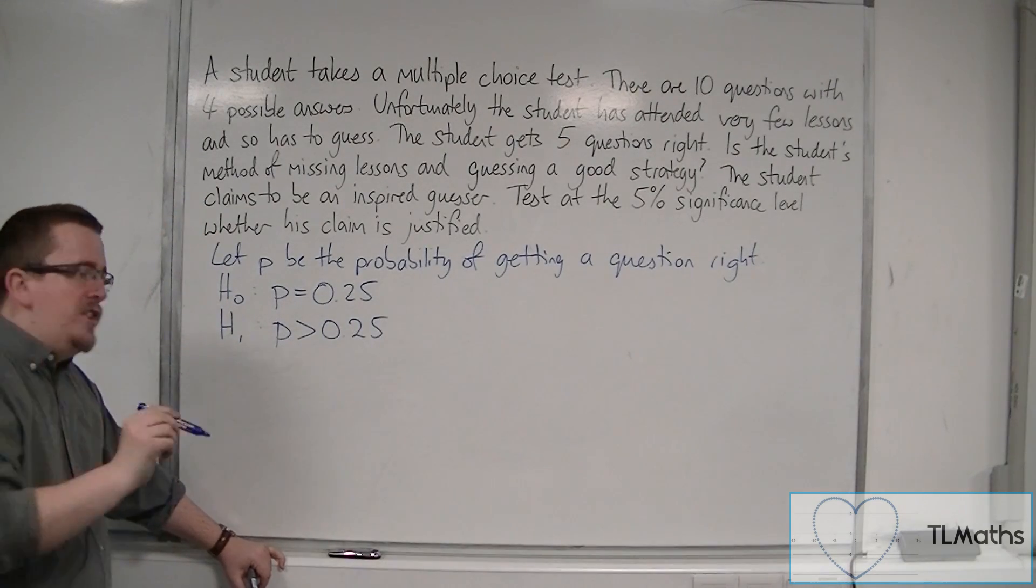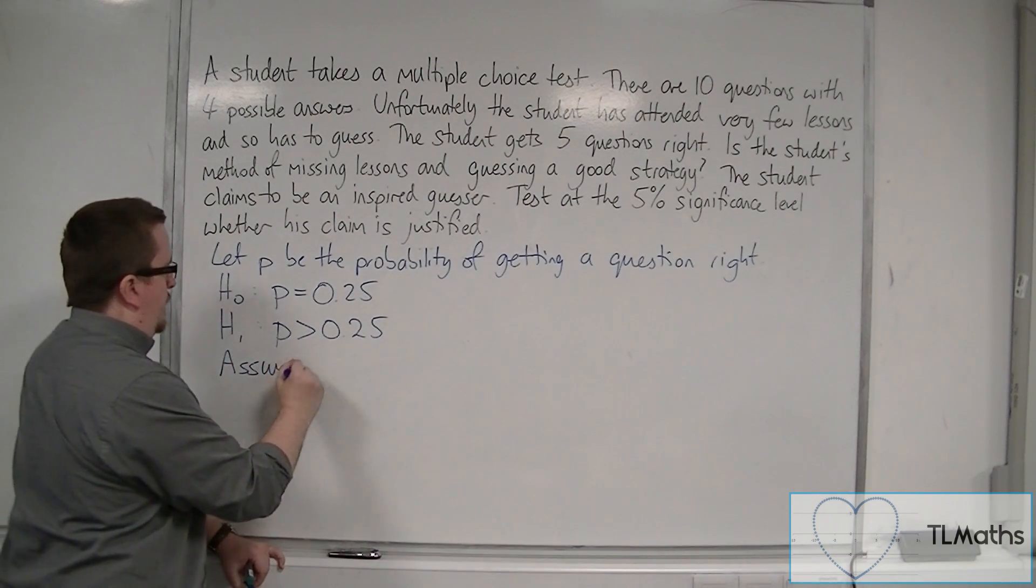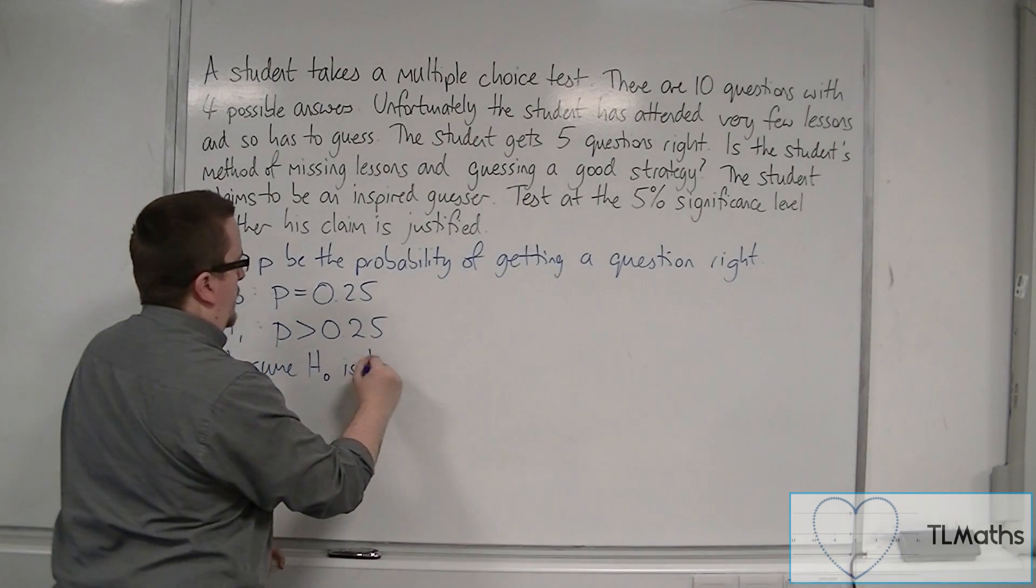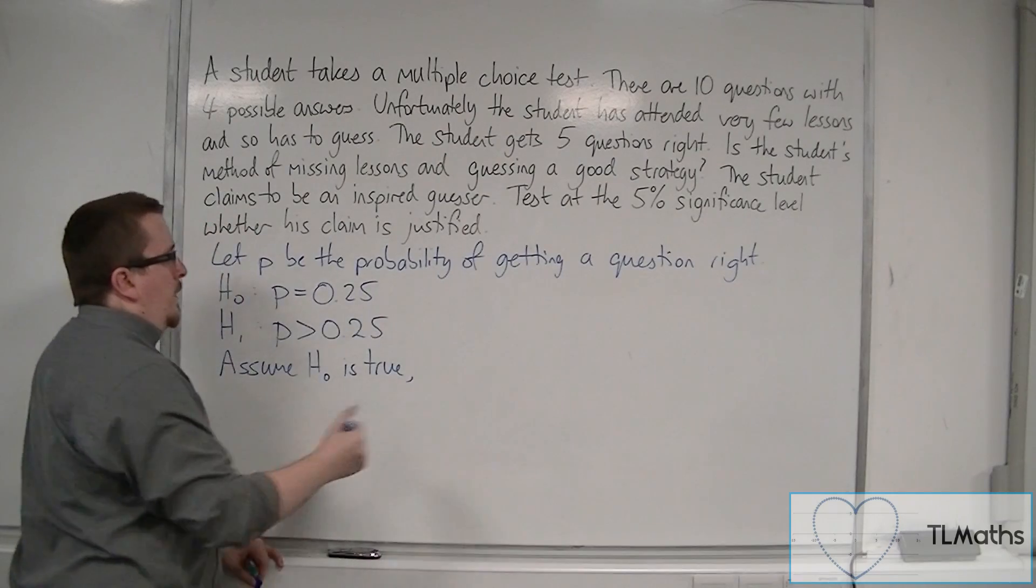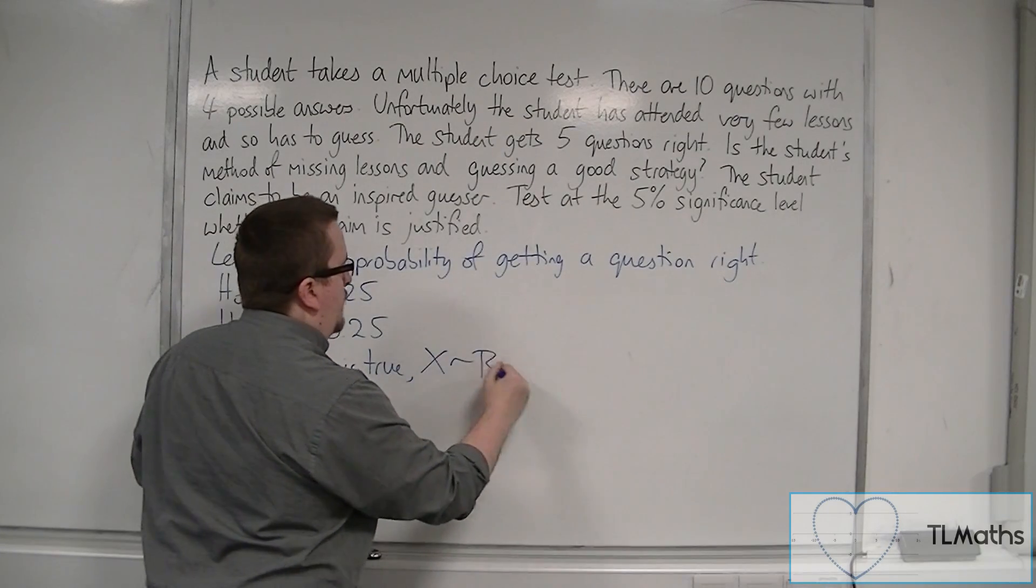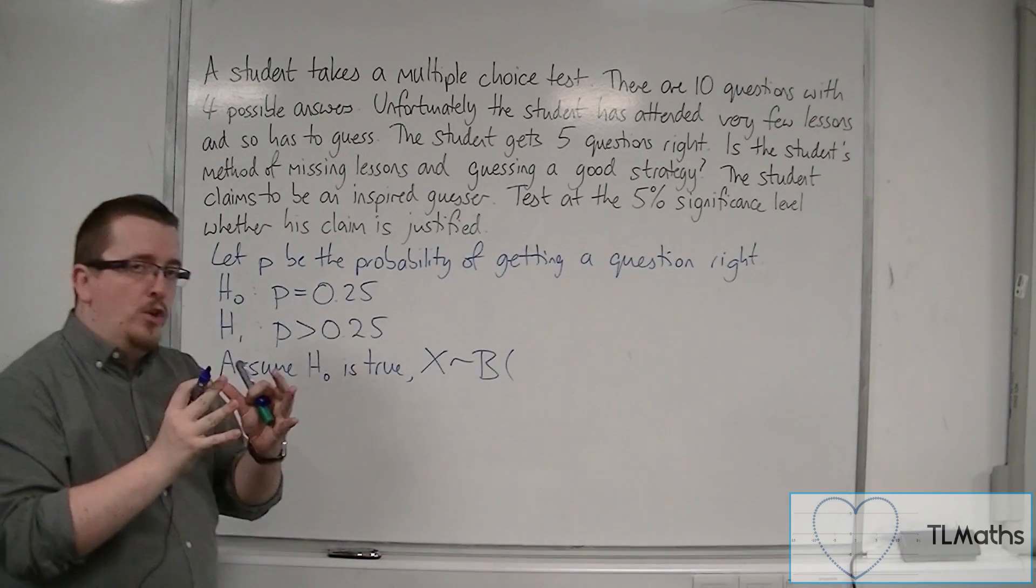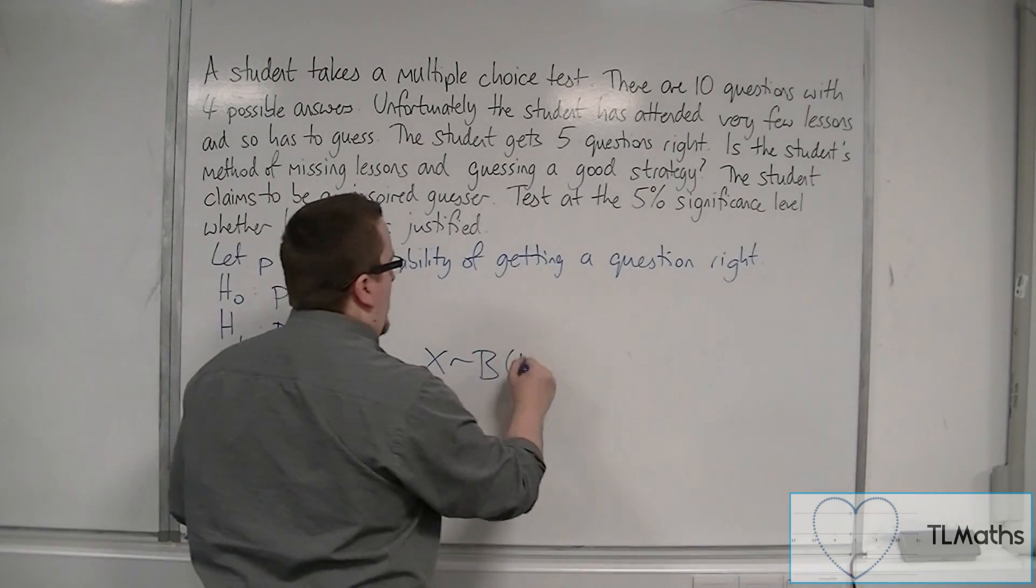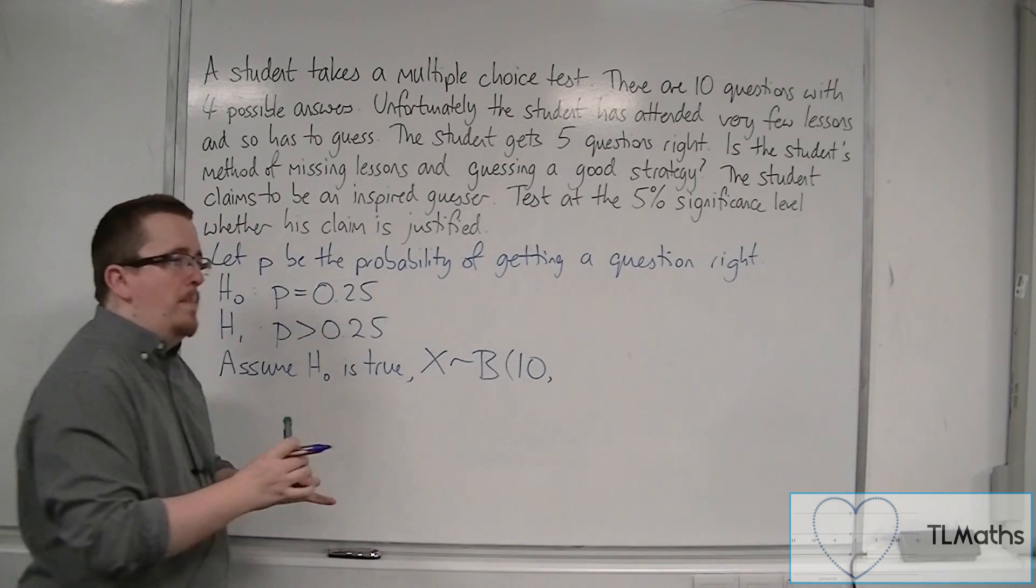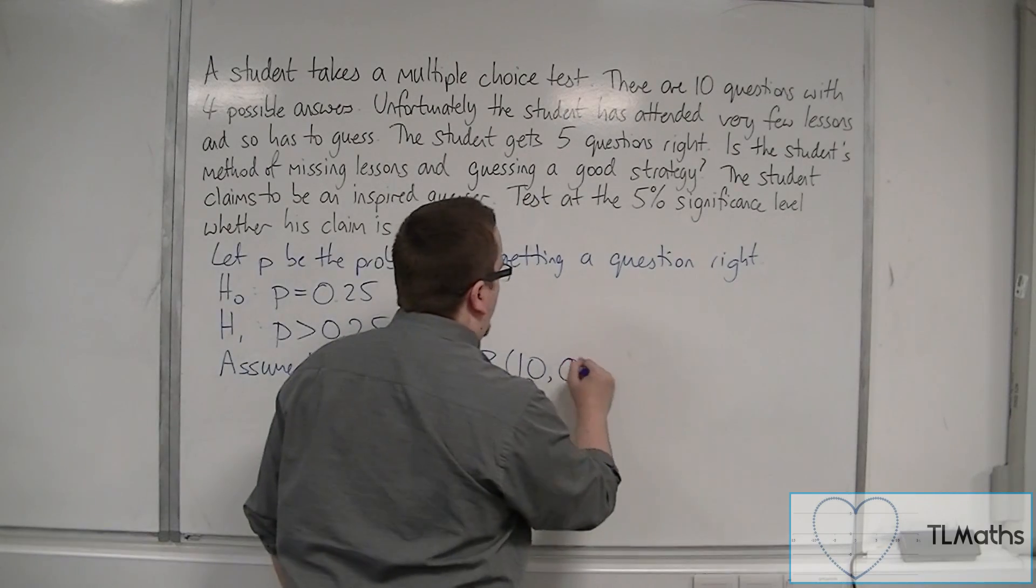So assuming that H0 is true, we're going to set up a binomial distribution with N, the number of trials. There are 10 questions, so that's the number of trials, with the probability of getting each one correct of 0.25.